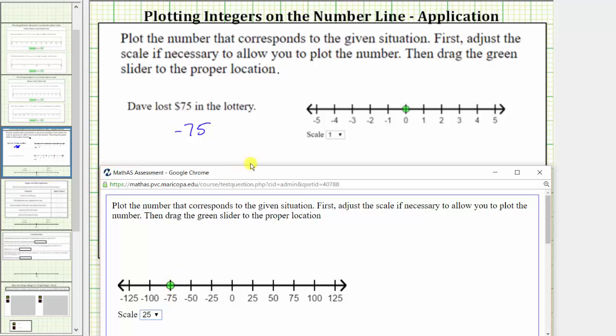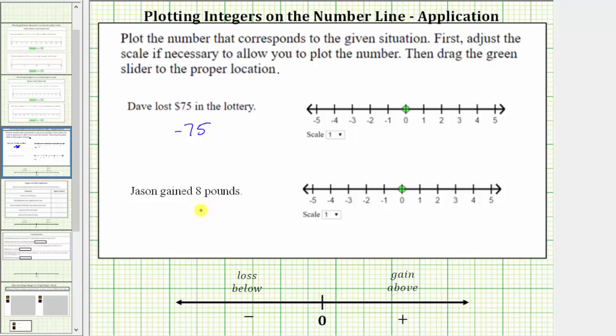For our next example, we are given Jason gained eight pounds. So because he gained eight pounds, the best number to describe the statement is positive eight. If Jason was to lose eight pounds, we would use the number negative eight to describe the situation. But because he gained eight pounds, we use the number or integer positive eight.